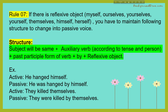Example: 'He hanged himself.' The answer will be: 'He was hanged by himself.' Here the subject remains the same — 'he.' It's a past indefinite tense, so the helping verb is 'was,' plus past participle 'hanged,' plus 'by himself.' Next: 'They killed themselves.' The answer will be: 'They were killed by themselves.' These are also important and easy rules.